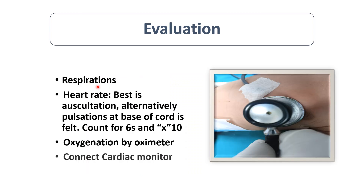Check chest movement to see if respiration has started. For heart rate, auscultate by placing the stethoscope on the precordium, count for six seconds, then multiply by 10. Monitor oxygenation by pulse oximeter and maintain SpO2 according to minutes of life. Also connect a 3-lead ECG.